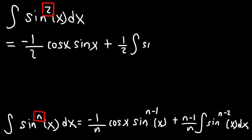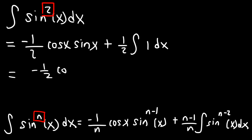Then we have the integral of sine to the n minus 2, so 2 minus 2 is 0. Anything raised to the 0 power is 1, so this becomes the integral of 1 dx. The integral of 1 dx is simply x, so we get negative 1 half cosine x sine x plus 1 half x plus c.